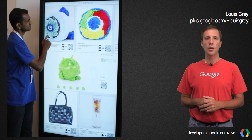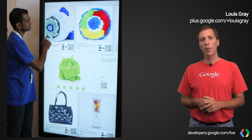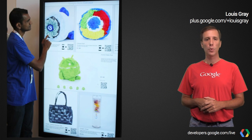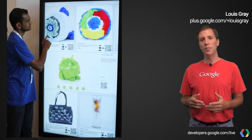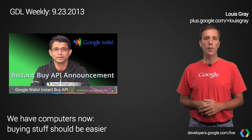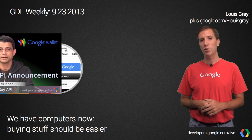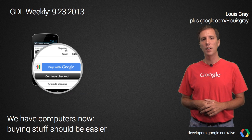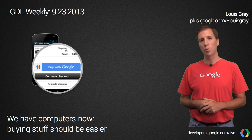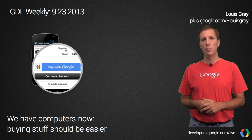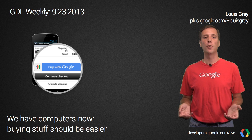Outside the studio, you saw the demo at Google I/O, and now you can read the docs and implement it yourself. The Instant Buy API for Android makes it incredibly easy for your customers to buy an item and check out as easily as they were using the Google Play Store. No manual entry of billing or shipping info means happier customers.